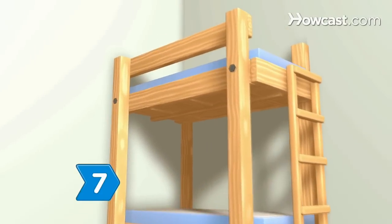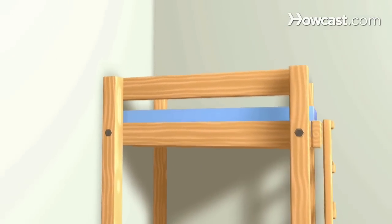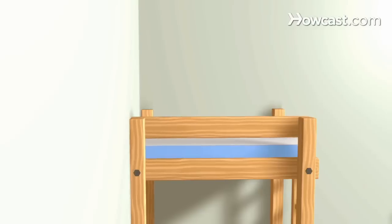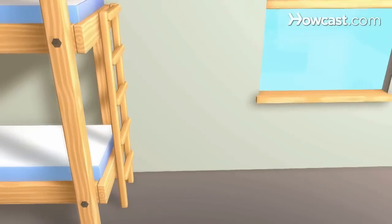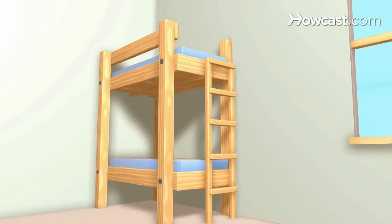Step 7. Use the remaining piece of wood to construct a safety rail and secure it to the upper bunk. Follow your blueprint to build a ladder, screwing together all the joints. Attach it to the frame per the instructions.